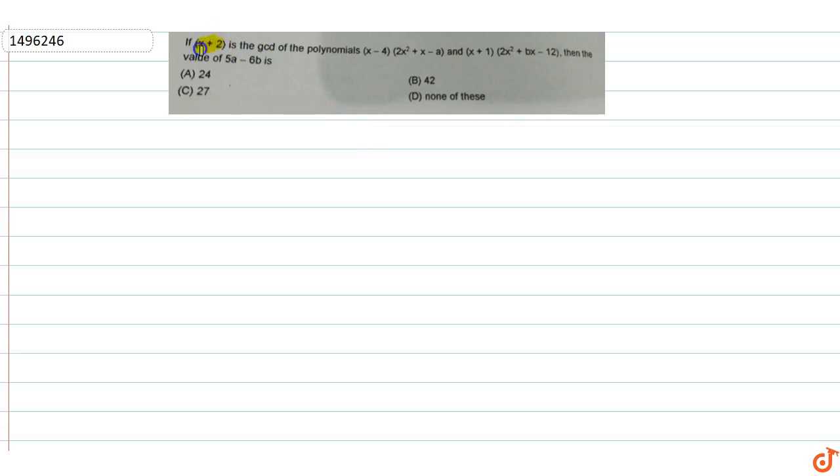In this question, if x+2 is the GCD of the polynomial (x-4)(2x²+x-a) and (x+1)(2x²+bx-12), then find the value of 5a-6b.